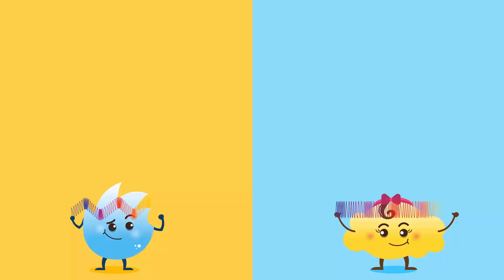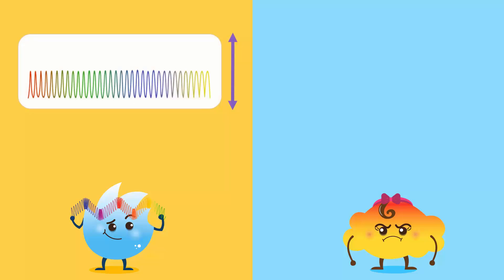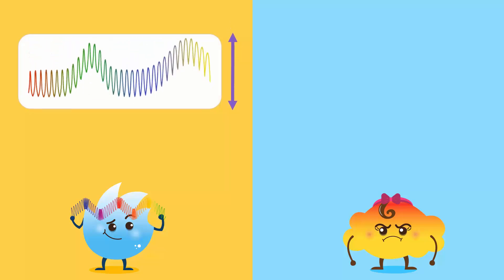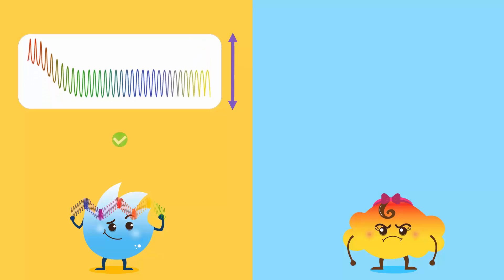Spiky and Bubbles were playing with their new rainbow-coloured slinky spring. They were making waves with the spring when they had a debate. Spiky fixed one end of the spring and moved the other end up and down. He said that this was how you made a wave.